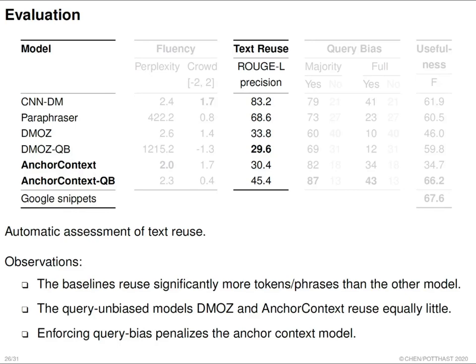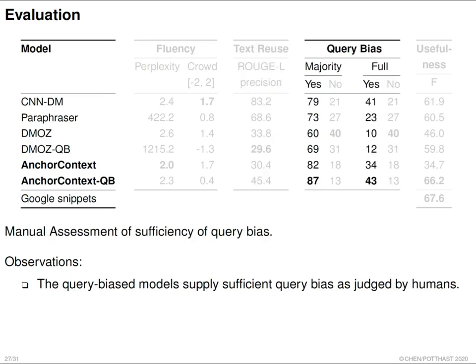For text reuse, measured by ROUGE-L precision (lower is better for abstractiveness), the two baselines — CNN/Daily Mail and the paraphrase-based system — largely reuse text from the original web page. Our models, whether trained on DMOZ or anchor context, have much lower text reuse. For query bias, crowdsource workers labeled the snippets, and query-biased models like anchor context QB and DMOZ QB perform better than their non-query-biased counterparts.